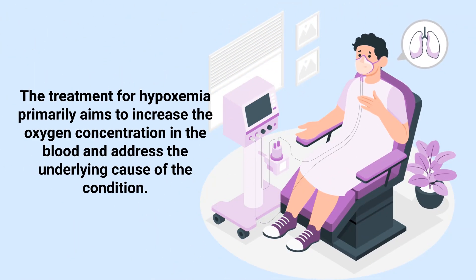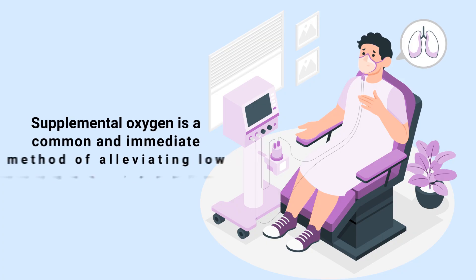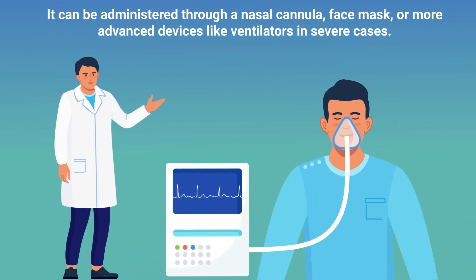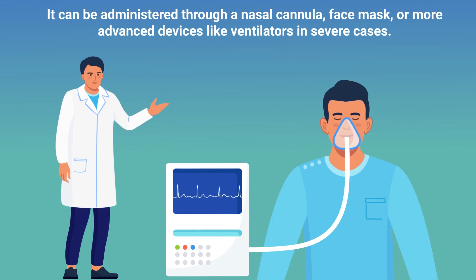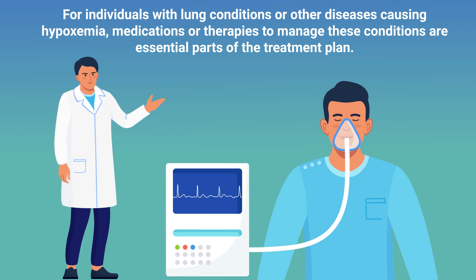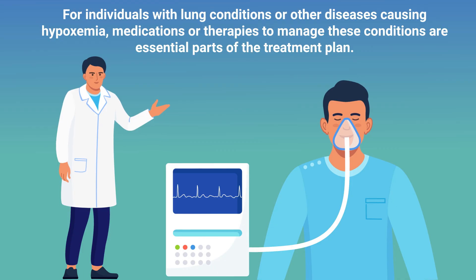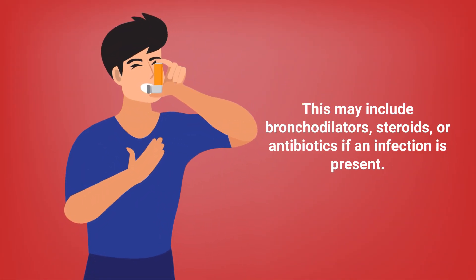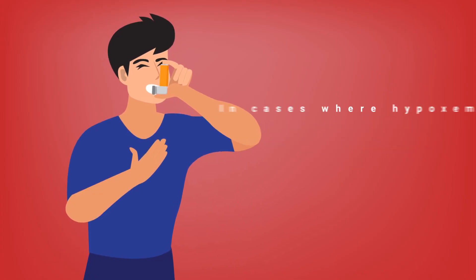The treatment for hypoxemia primarily aims to increase the oxygen concentration in the blood and address the underlying cause of the condition. Supplemental oxygen is a common and immediate method of alleviating low oxygen levels. It can be administered through a nasal cannula, face mask, or more advanced devices like ventilators in severe cases. For individuals with lung conditions or other diseases causing hypoxemia, medications or therapies to manage these conditions are essential, including bronchodilators, steroids, or antibiotics if an infection is present.